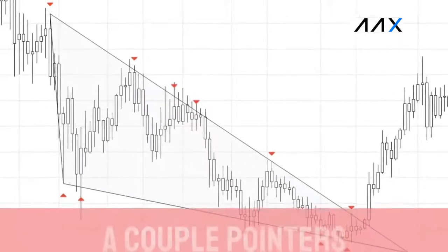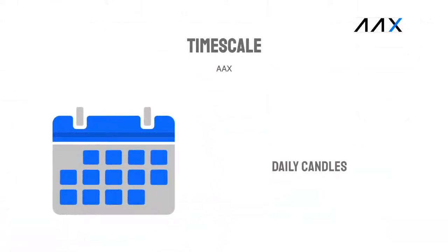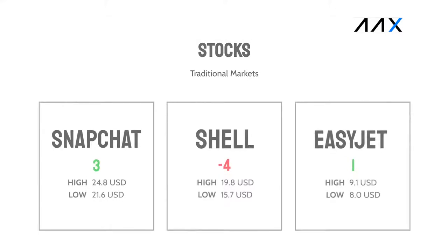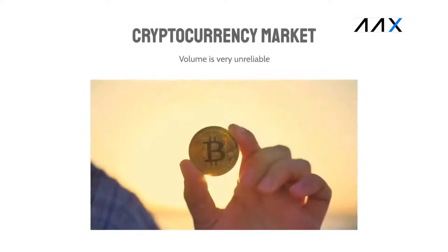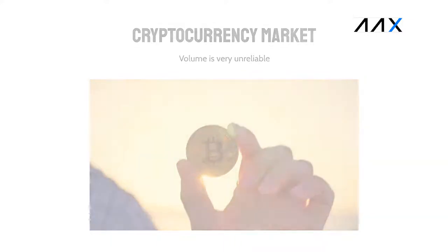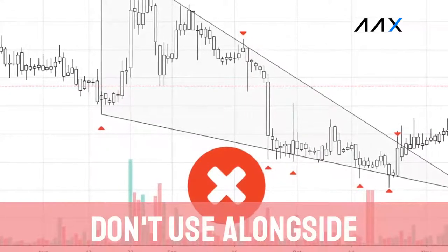A couple of pointers on wedge formations before we take a deeper look into them. Firstly, wedge formations are most effective on the daily candles, with a formation taking at least three weeks. Secondly, wedge formations are often used alongside volume in the stock market. However, in the cryptocurrency market, the volume indicator is misleading, and therefore it should not be used alongside wedge formations.